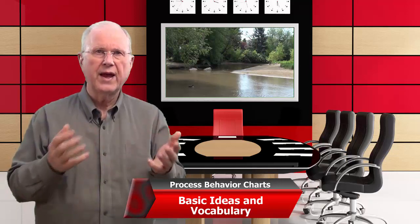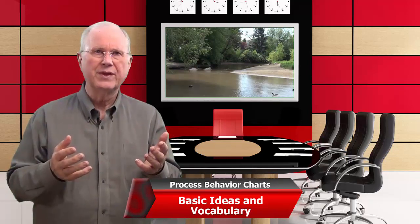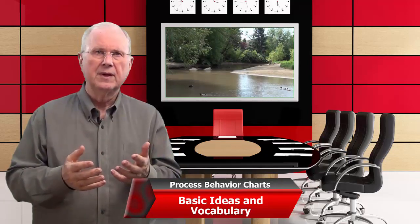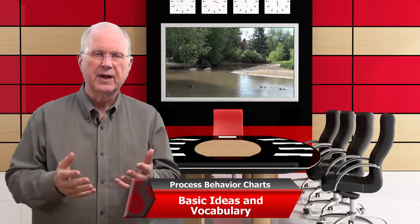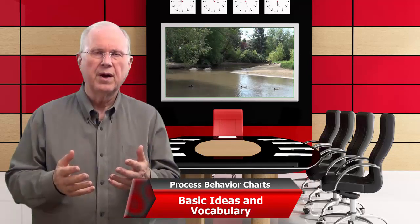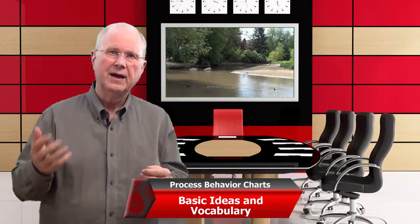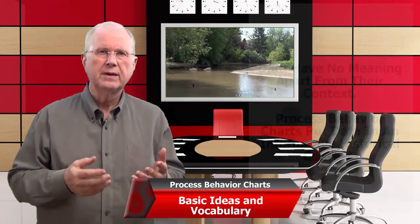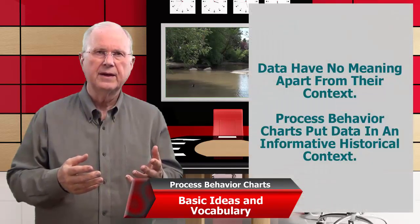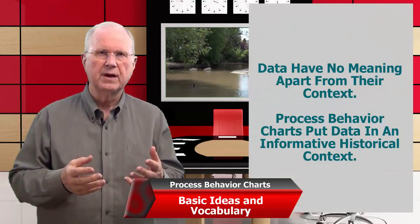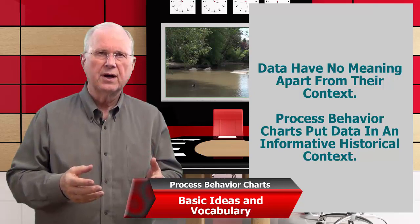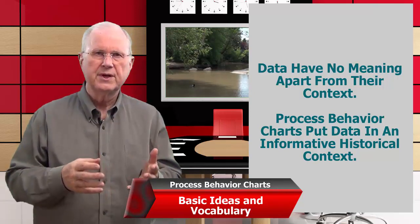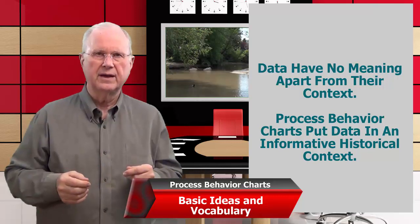That's important — you don't want to spend your time trying to chase down the cause of random variation; that's pointless. If data are just random, then we can predict within limits where the next point will happen. Boring, stable, predictable, in-control processes are normally what we desire unless we're trying for change. It's an important fundamental idea that data have no meaning apart from their context. Putting the data in the process behavior chart puts it in an informative historical context.